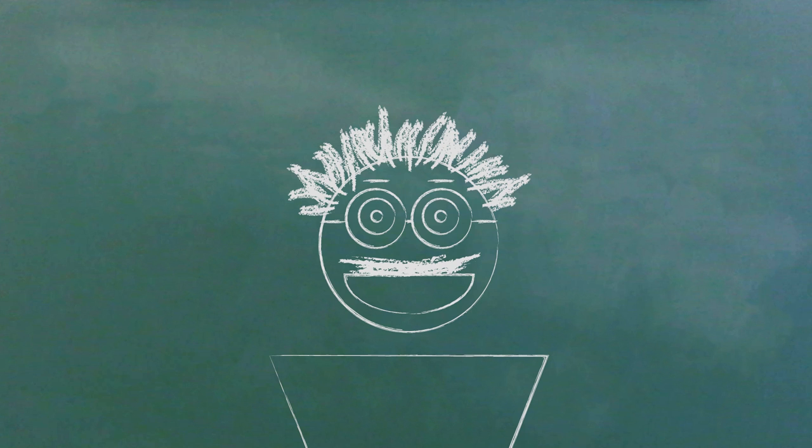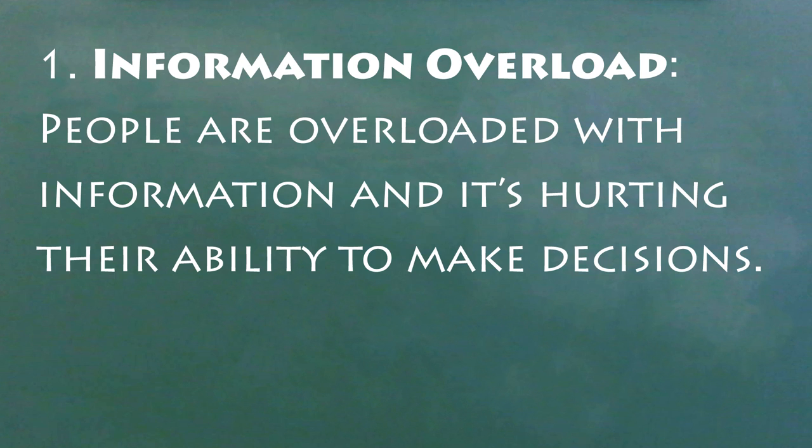So how does this impact politics? Well, if people can't keep up with all the information out there, they end up missing a lot, or what they know is totally random and often just ends up confirming what they already believe. And when they're dealing with new things, they get more emotional and more overwhelmed more quickly. So, number one, people are overloaded with information and it's hurting their ability to make decisions.